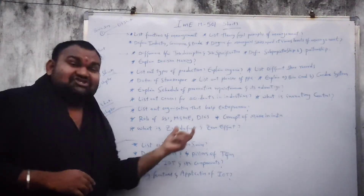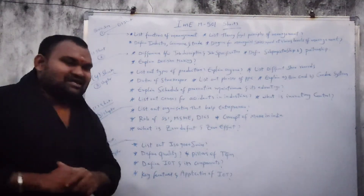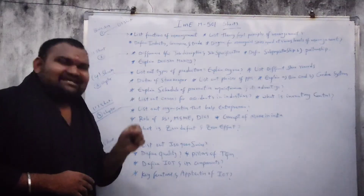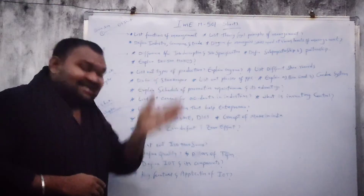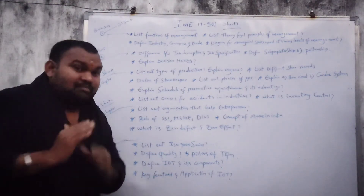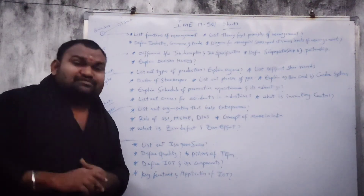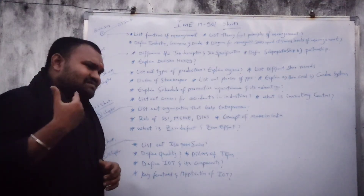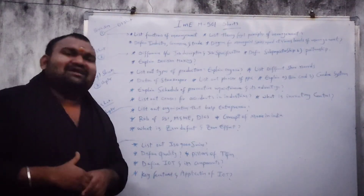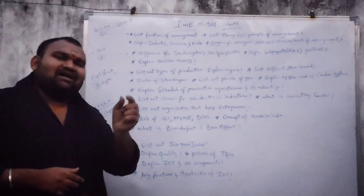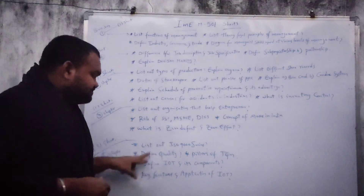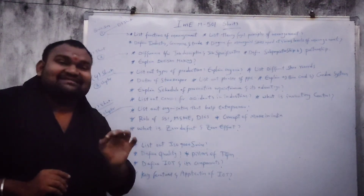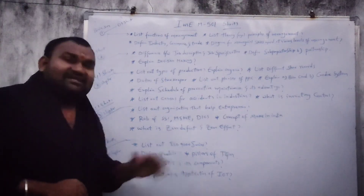What is Zero Defect and Zero Effect? Zero Defect and Zero Effect. The last and final chapter — we are going to list out the ISO 9000 series. Define Quality — this is the definition, different names from our textbook. List out the names of scientists. What are the pillars of TQM — Total Quality Management? Define IoT — Internet of Things — a three-line definition which gives 3 marks, and its components.